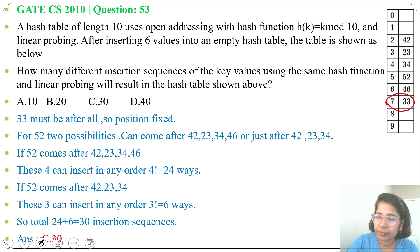33 position is fixed. 46 can come before 52 or after 42, 23, 34. It will not affect 52 position. If 52 comes after these 3, then 3 factorial ways. So 6 ways we can arrange these 3: 42, 23 and 34.